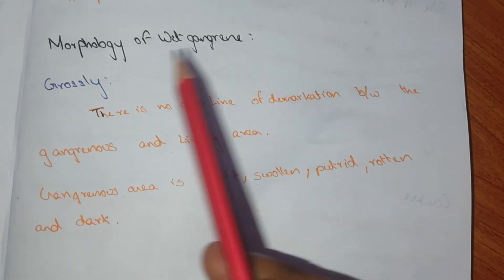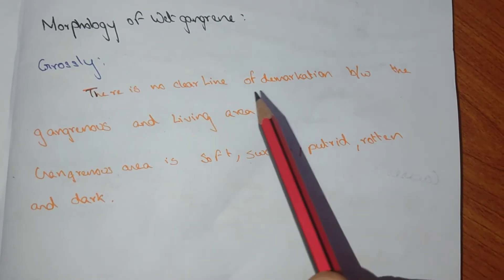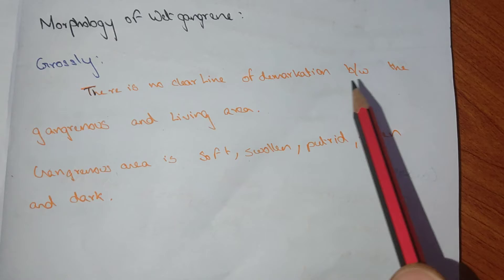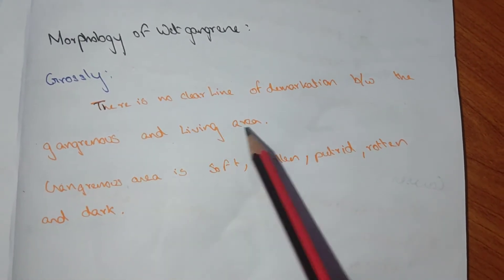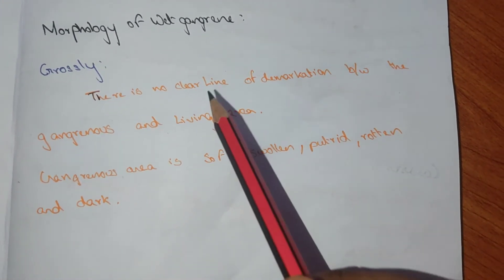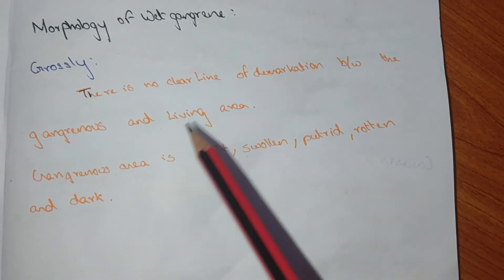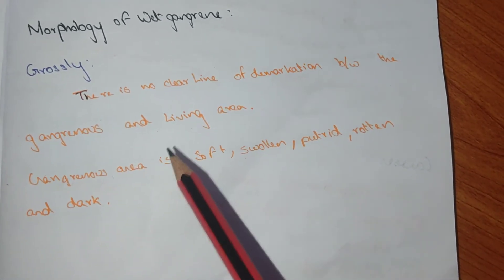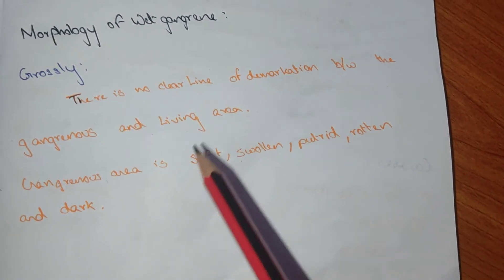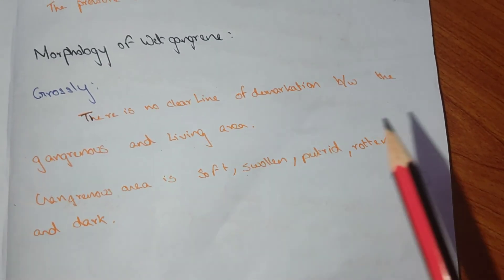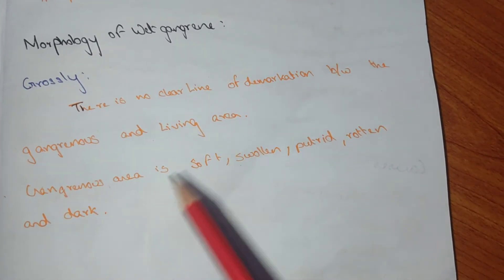Morphology of wet gangrene: grossly, there is no clear demarcation between the gangrenous and living area, in contrast to dry gangrene which shows a clear red line of demarcation. The gangrenous area is soft, swollen, putrid, rotten, and dark.